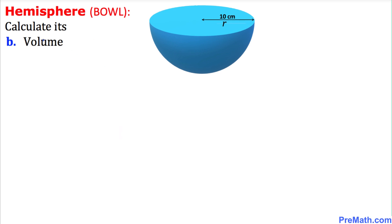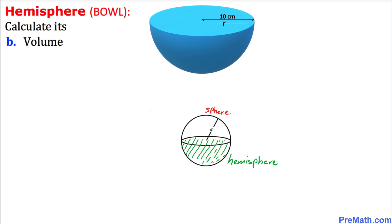Now let's calculate the volume of this given shape. Here is our sphere with radius r — this is the whole rounded shape — and the hemisphere is going to be half of this sphere. We know that the volume of the whole sphere is (4/3)πr³.